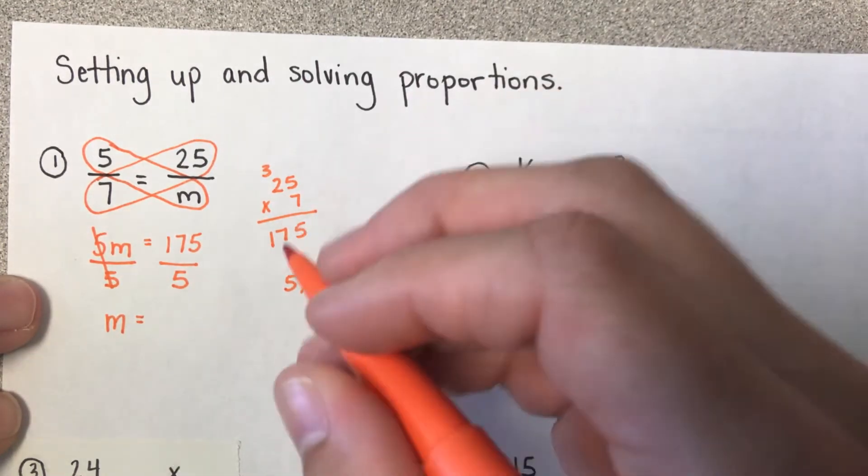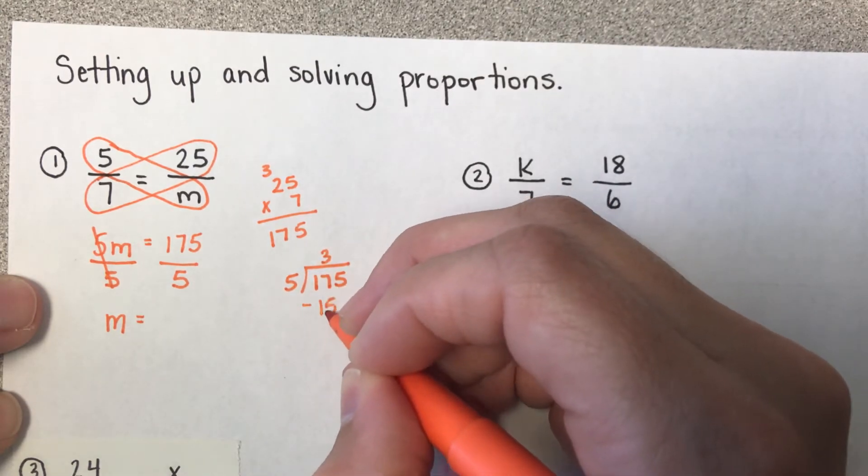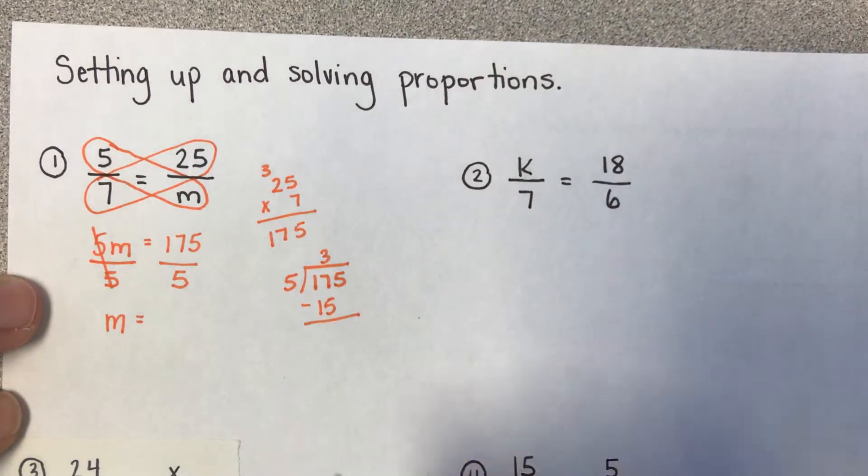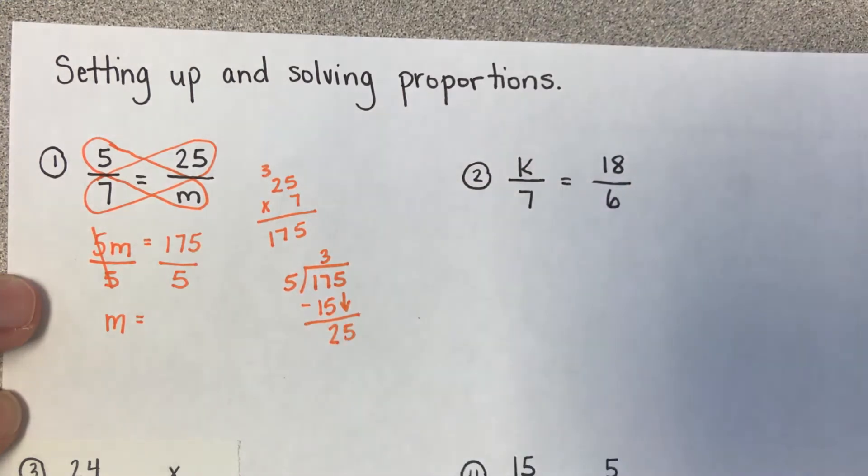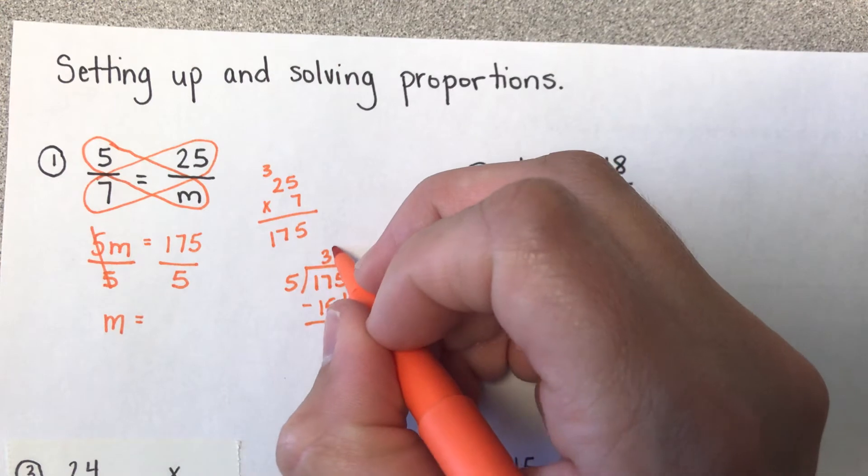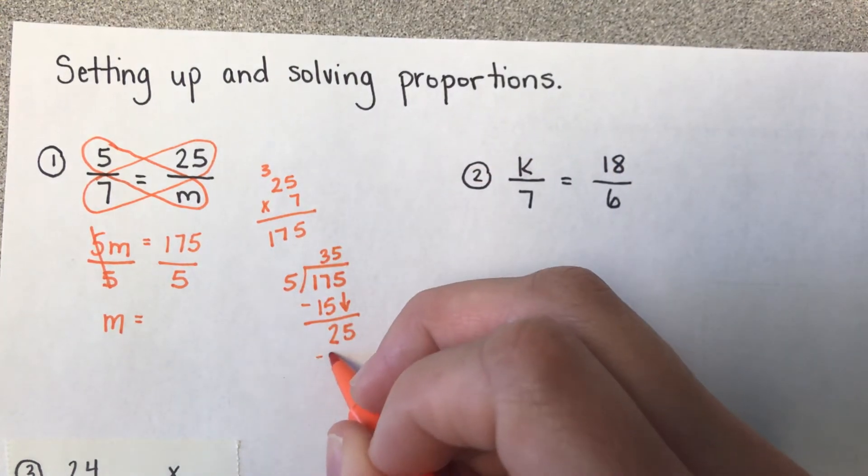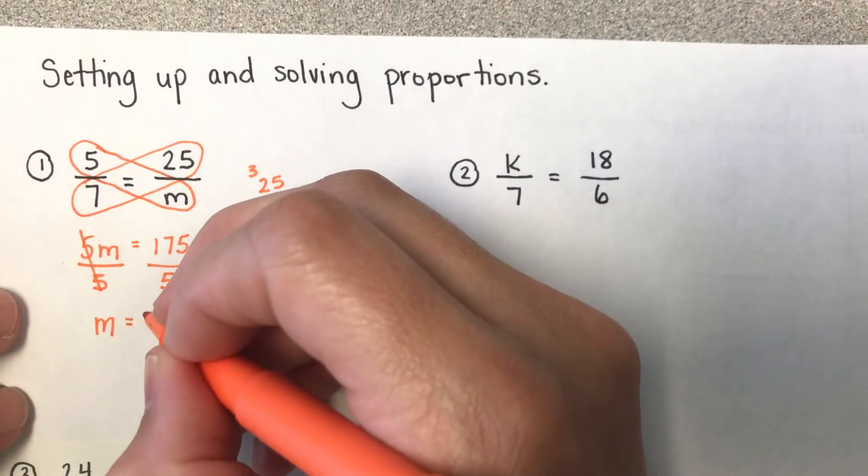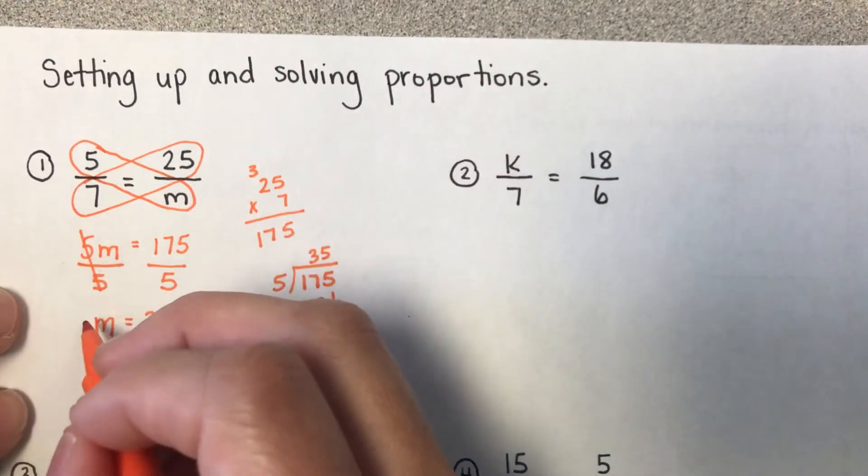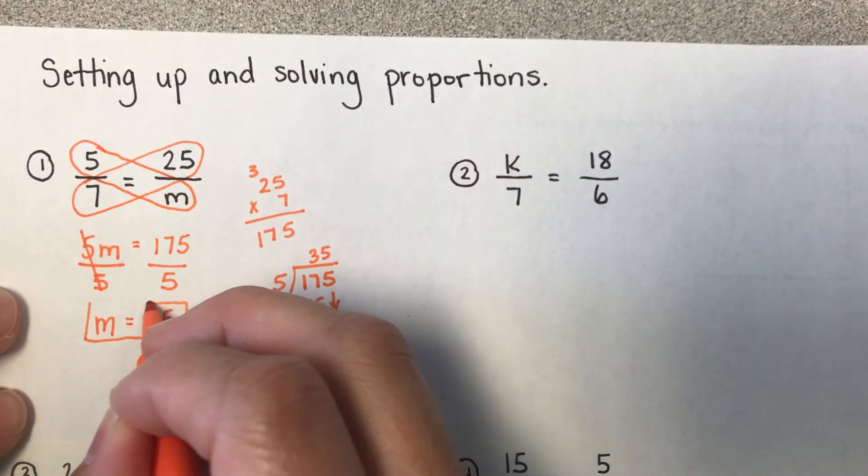These two 5s over here will cancel out, so I'm just left with m. And now I'll just need to solve this side. So 175 divided by 5. I know this is 3. 17 minus 15 gives me 2. Bring down my 5. How many times does 5 go into 25? Well, it goes into it 5 times. 5 times 5 is 25. That's why I know I'm done. So now I know that m equals 35.